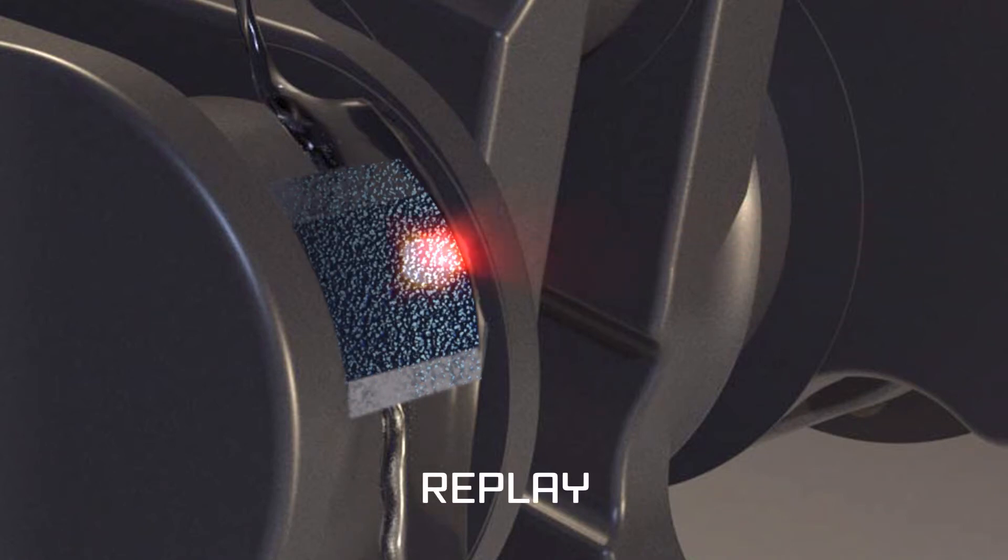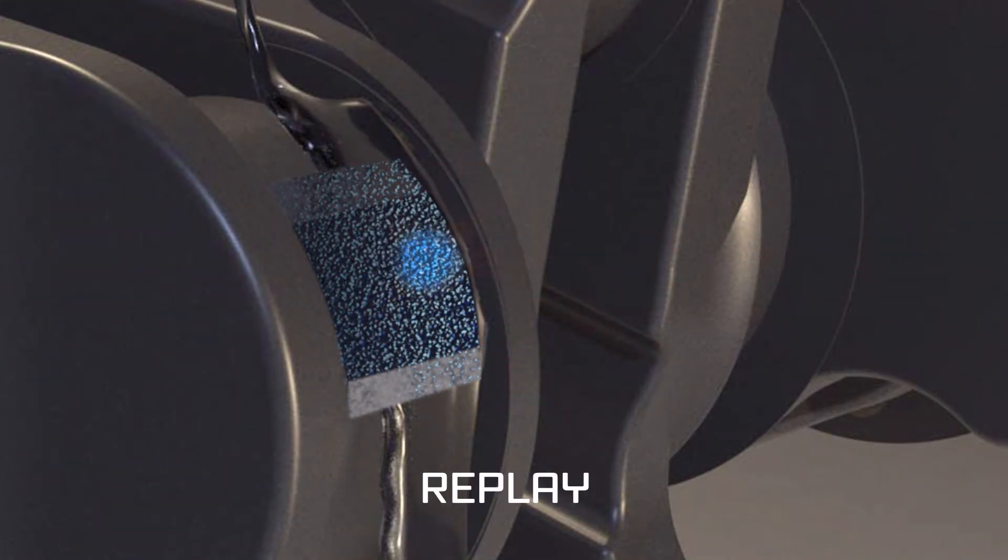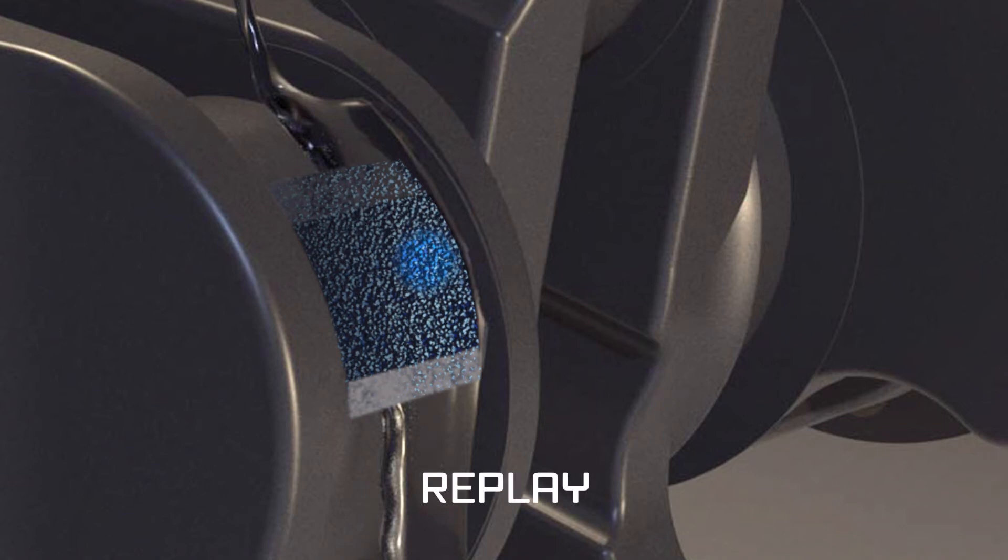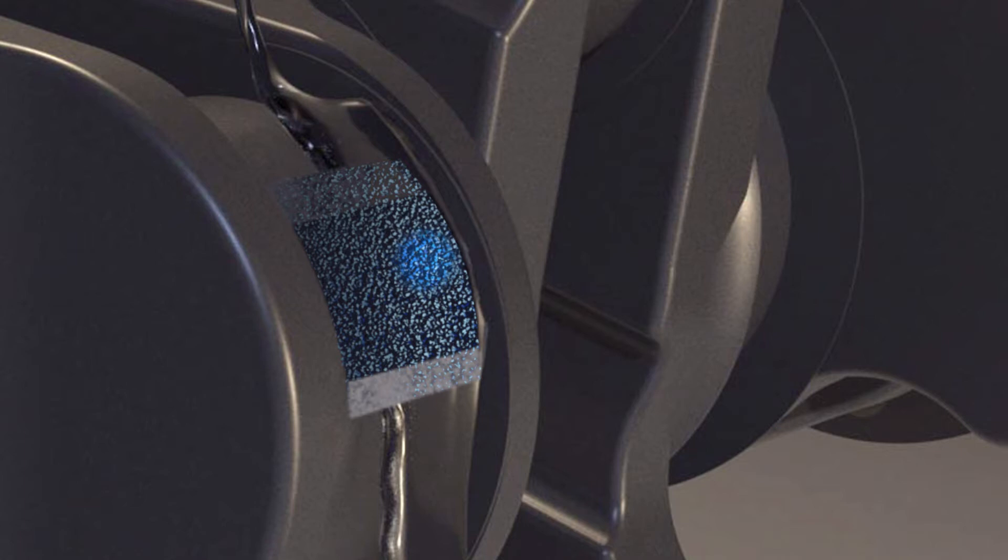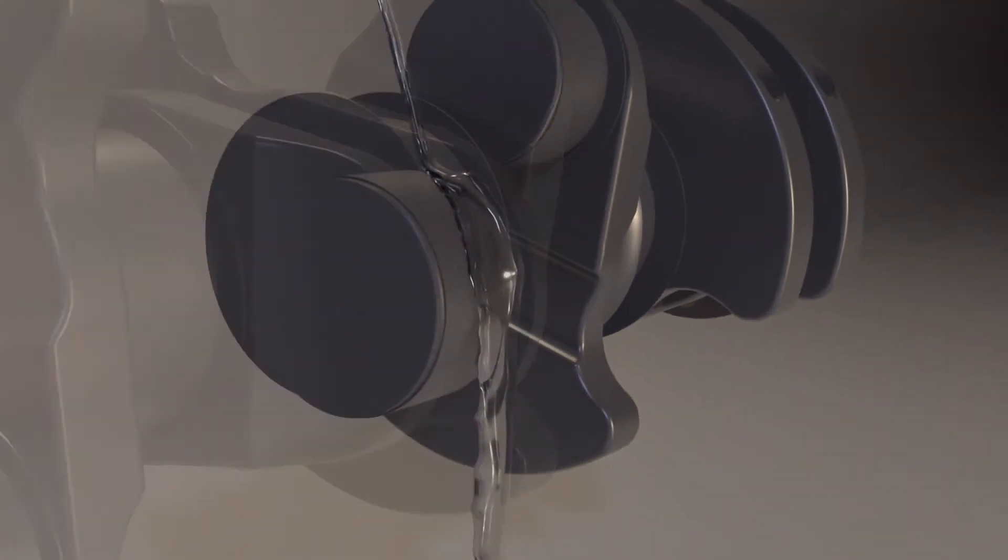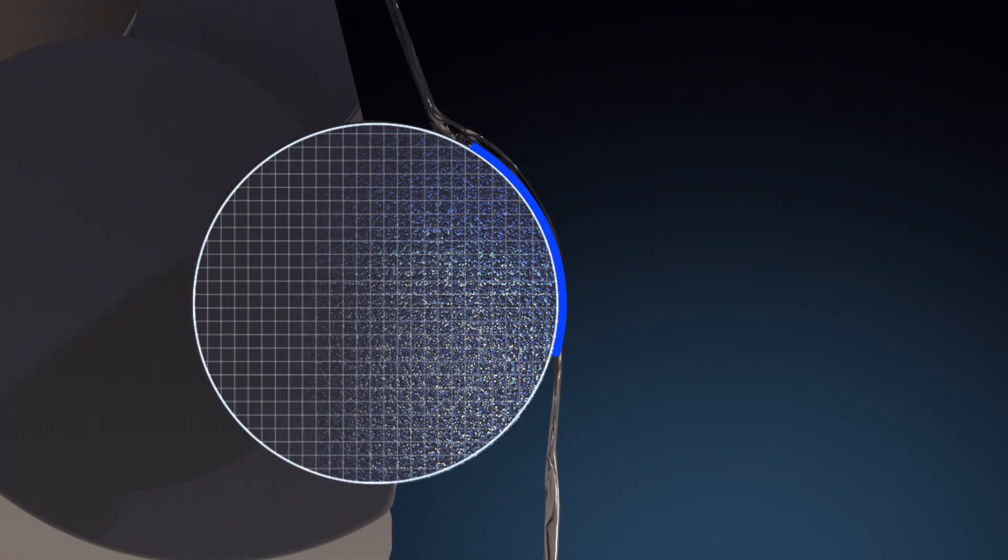When the laser pulse hits the metal surface, the water confines the resulting shock wave, which penetrates deep into the part. Looking even closer, we can represent the grain structure of the metal by this grid structure.